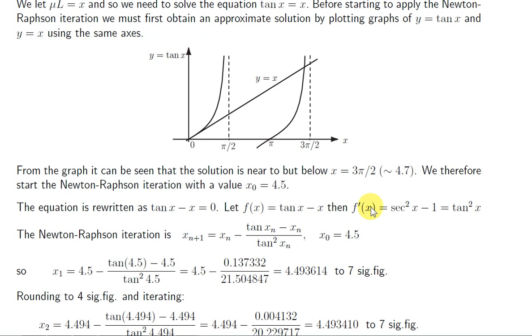And the first approximation for a root of this equation is going to be x0, which is 4.5. Now, for the Newton-Raphson method, we need the derivative of the function. So we need to differentiate tan of x minus x. The derivative of tan x is sec squared x, the derivative of minus x is minus 1. And using identities, that can be written as tan squared x.